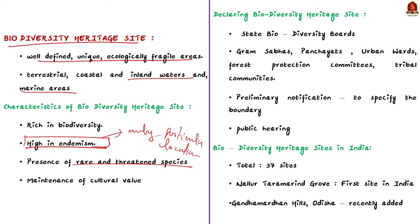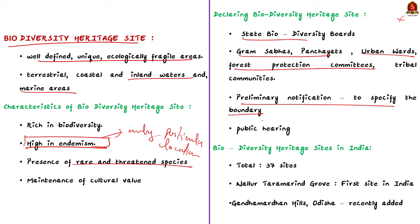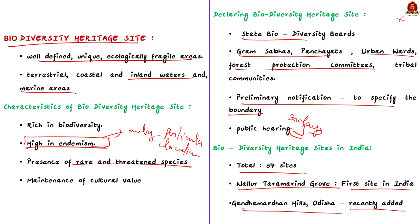The State Biodiversity Board investigates suggestions for declaring a site as a Biodiversity Heritage Site, considering input from communities through Biodiversity Management Committees, Gram Sabha, Panchayat, Urban Watch, Forest Protection Committees, and Tribal Councils. After scrutiny, the State Biodiversity Board issues a preliminary notification specifying boundaries, followed by a public hearing after 30 days, and then the final announcement. India has around 37 Biodiversity Heritage Sites in total. The Nallur Tamarind Grove was the first Biodiversity Heritage Site of India, and Gandhamardan Hill in Odisha is the last added.